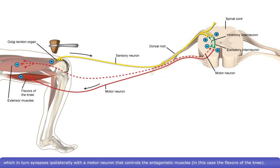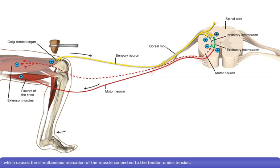This leads to contraction of these muscles, which causes the simultaneous relaxation of the muscle connected to the tendon under tension. The contraction of one muscle resulting in the relaxation of its antagonist is known as reciprocal innervation.